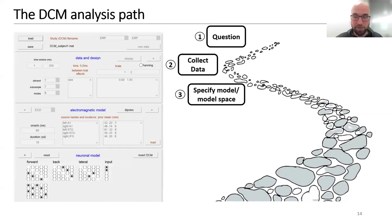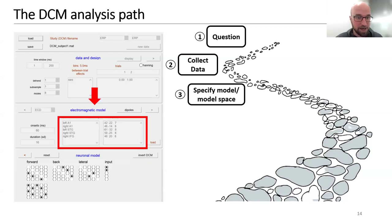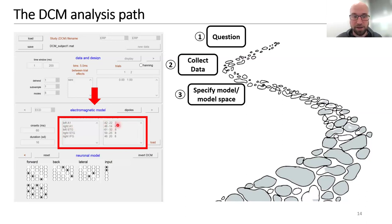In the SPM GUI, the network is specified using the blocks on the left-hand side where you give the region a name — for example 'left A1' — and on the right-hand side you specify the center of the region in MNI coordinates.